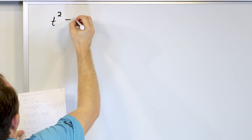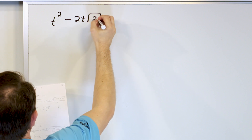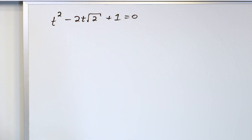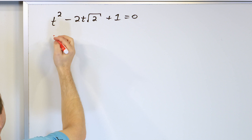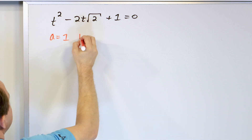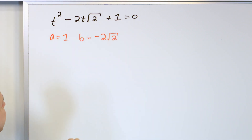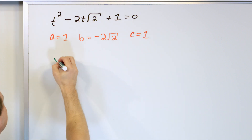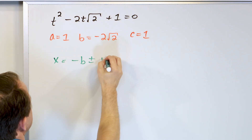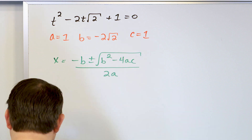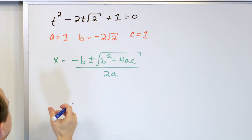This is a similar problem, slightly more complicated. What if the quadratic is t squared minus 2 times t times the square root of 2 plus 1 equals 0? Again, let's identify a, b, and c. A is going to be 1. B is everything other than the t in that term: negative 2 times the square root of 2. C is equal to 1. So we write down the quadratic formula: negative b plus or minus the square root of b squared minus 4ac, all divided by 2a. Now I'm in a position to substitute everything in — you just have to be a little careful.